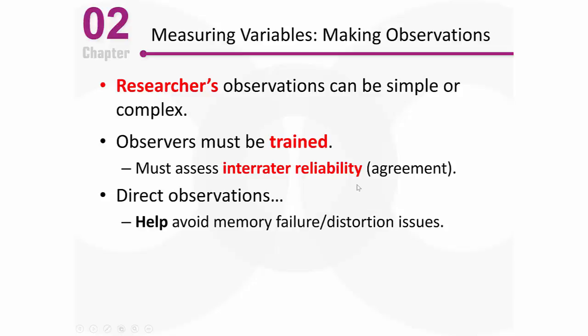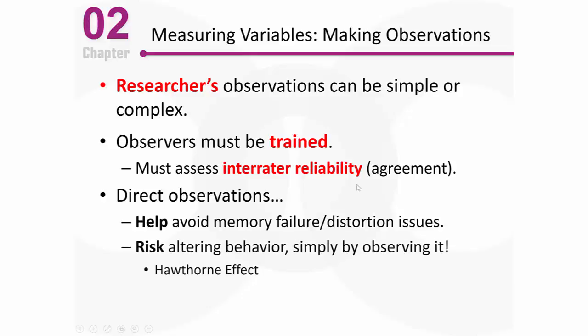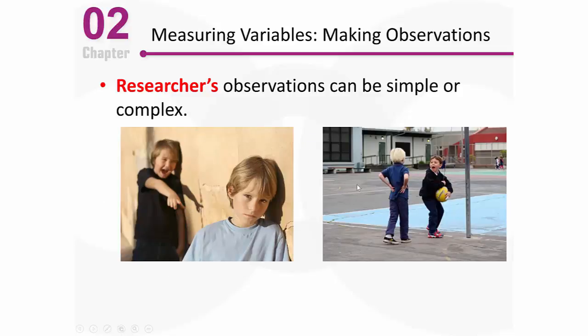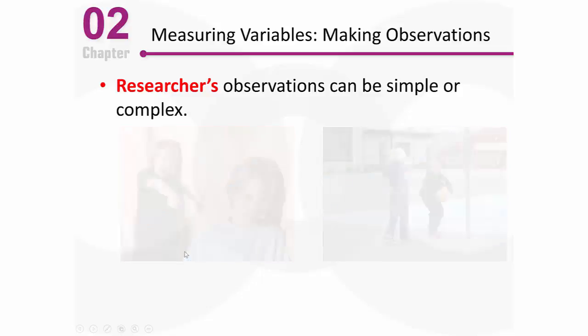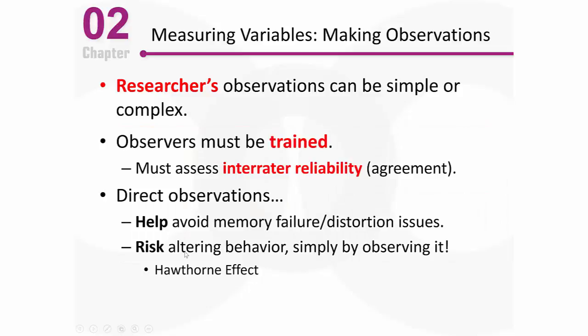Direct observations by researchers really help avoid the memory failures and distortions we talked about with self-report, because we're not relying on subjects to give us the information. But when we make direct observations, we also risk altering the behaviors we're trying to observe. If those kids on the schoolyard see us watching, they might not engage in those behaviors at all because they know someone's watching. We call that the Hawthorne effect, which comes from a famous study done years ago.